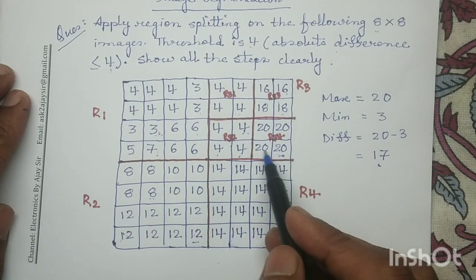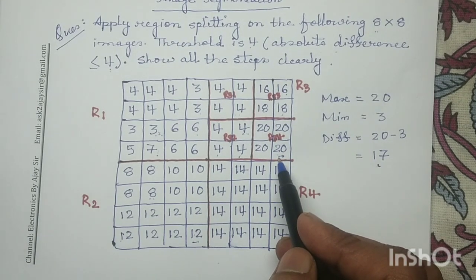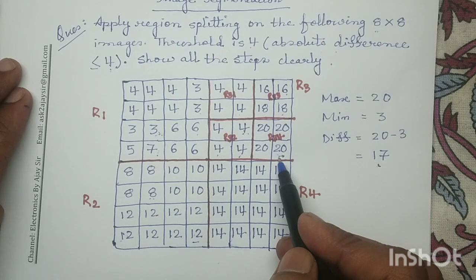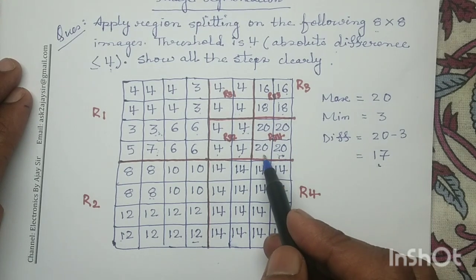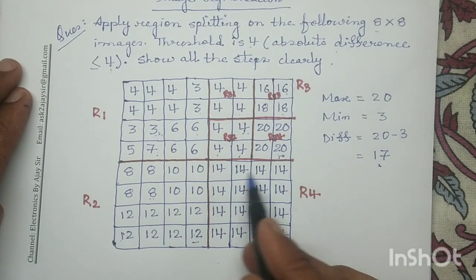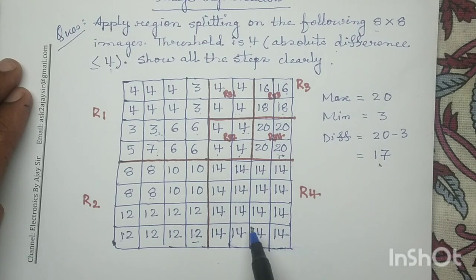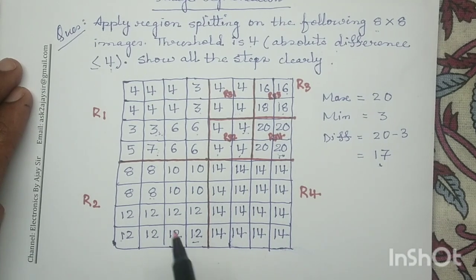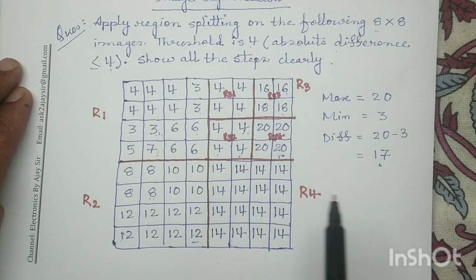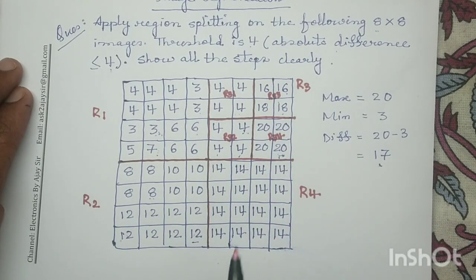Similarly for R34, all pixels have the same coefficient 20, so the absolute difference is 0, which is acceptable, and we will not further split sub-region R34. Coming to R4, all pixels have the same coefficient 14, so there is no need to further subdivide R4. With this we have performed the region splitting operation for the given input image.